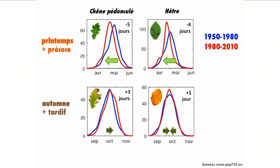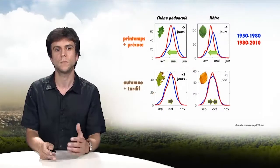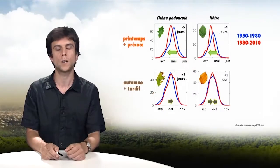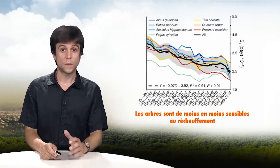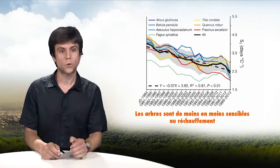That is a direct impact of global warming. The same thing can be seen in the autumn — the leaves fall later and later, although the signal is not quite as clear as in the spring.